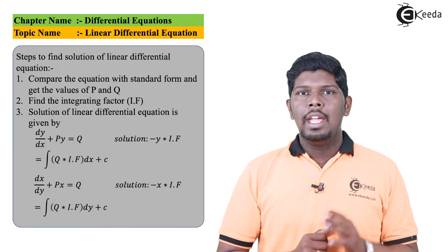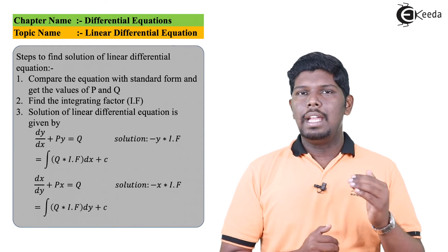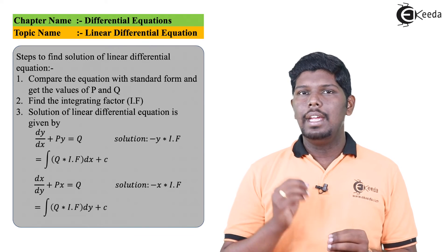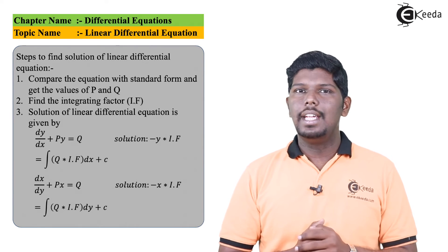If we have the first form like dy/dx + Py = Q, the integrating factor is given by e raised to integral P dx, and for the second case it is e raised to integral P dy.